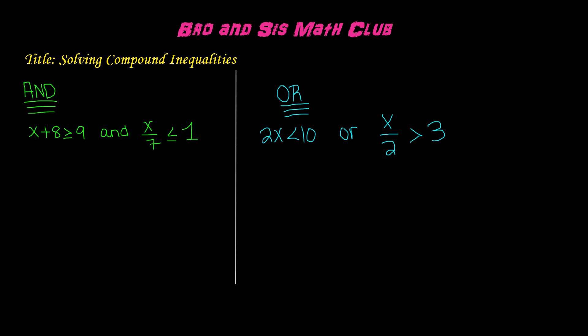The reason we call them 'and' and 'or' is because either the inequalities will be conjoined with the word 'and' or the word 'or.' When you graph the solutions to each of these inequalities, either the solution will be between the two points or it will be going in opposite directions.